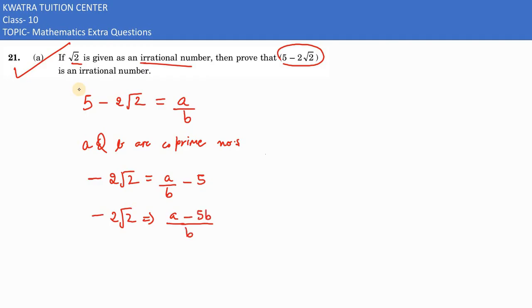Now take the LCM of the right hand side, so it would become a minus 5b over b. Now on the left side, you can take minus 2 to the denominator, so it would be nothing but a minus 5b divided by minus 2b.